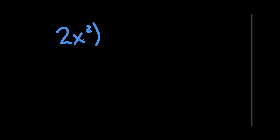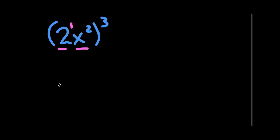Now let's talk about what happens when we put a number inside parentheses as well. That number actually has a power — we just don't write it. It is 2 to the first power, even though we don't write the 1. Anytime there's a missing power of 1, I suggest you write it in so you don't forget to apply the appropriate operation. Now we can see we have a power to a power on two different things: 2 to the first and x squared.